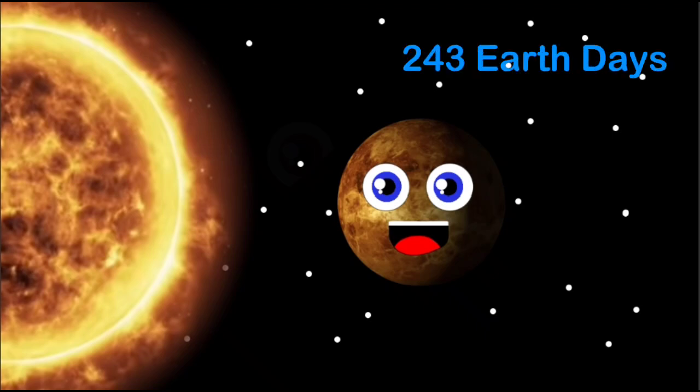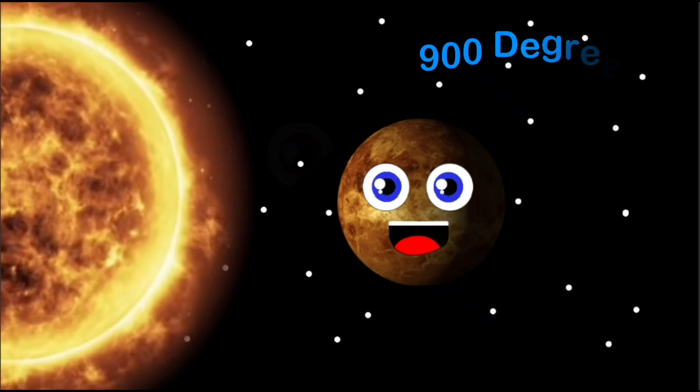243 Earth days is how long it takes for me to orbit the sun. That makes just one of my days. I'm 900 degrees, yeah that's Fahrenheit. I'm the hottest planet in the solar system, that's right.